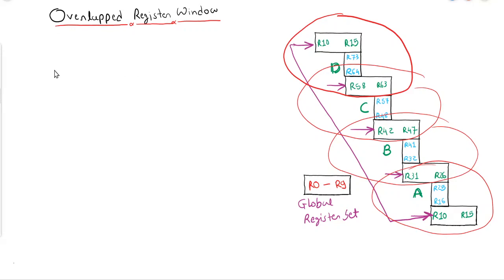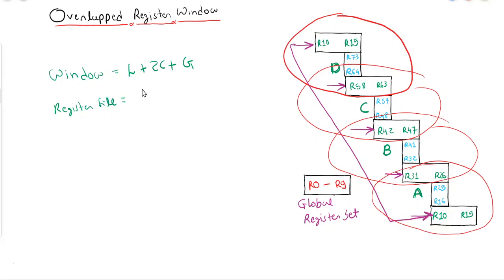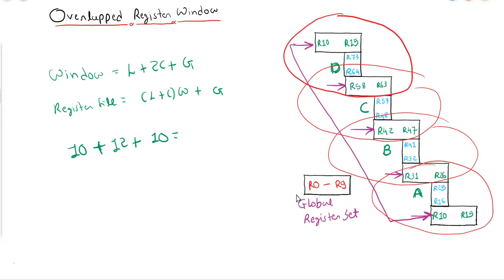If we write the expression for a window, as you can see in the figure, there will be one local set plus two common sets plus one global set. For the register file, it will be local plus common multiplied by the number of windows plus G. Calculating window size: 10 registers for local, plus 6 plus 6 equals 12 registers for common, plus 10 for global — so the total window size is 32.